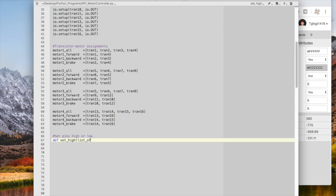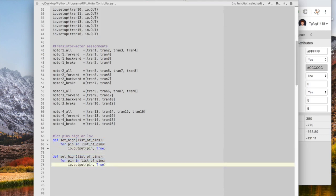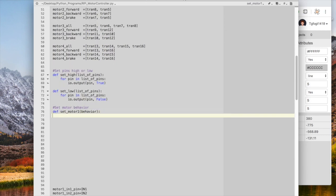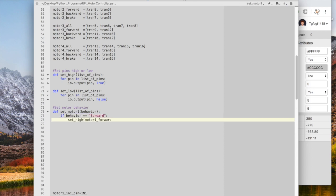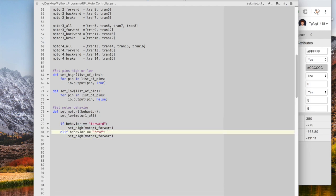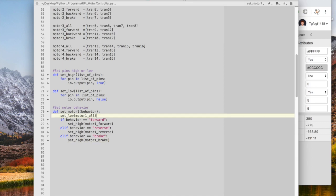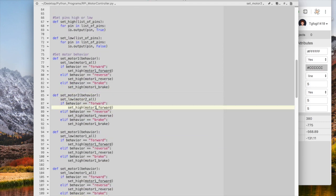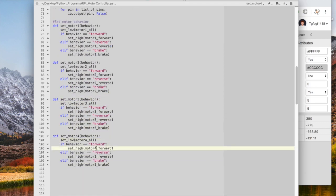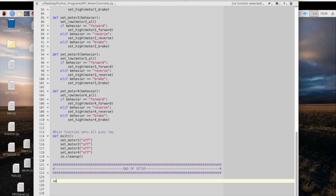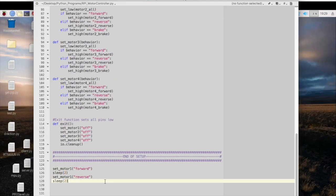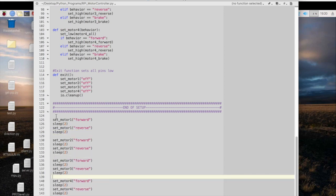And we'll just write some functions to set lists of pins high or low. Now we'll write the behavior for each motor, setting the correct transistors on or off according to whether or not we want each motor to be going forward, backward, or braking. And that's all of our setup, so now we'll write a script that'll test out each of the motors going forward and backwards.